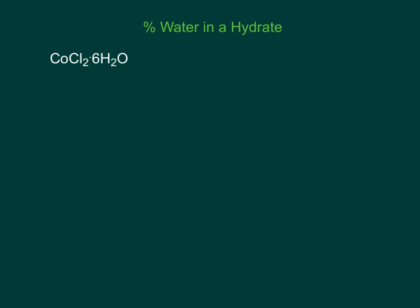So one thing you can do with a hydrate is figure out the percentage of water in that hydrate. When we did percent composition, we tried to find the percentage of each element. In this case, we're just going to find what percentage of it is water. So percent is part over whole.